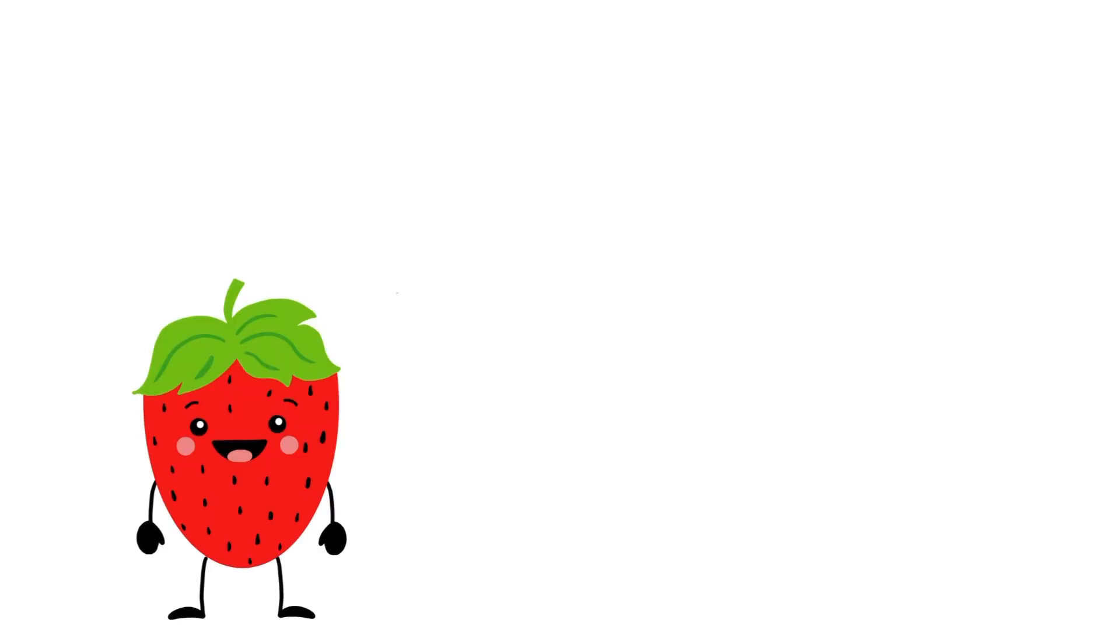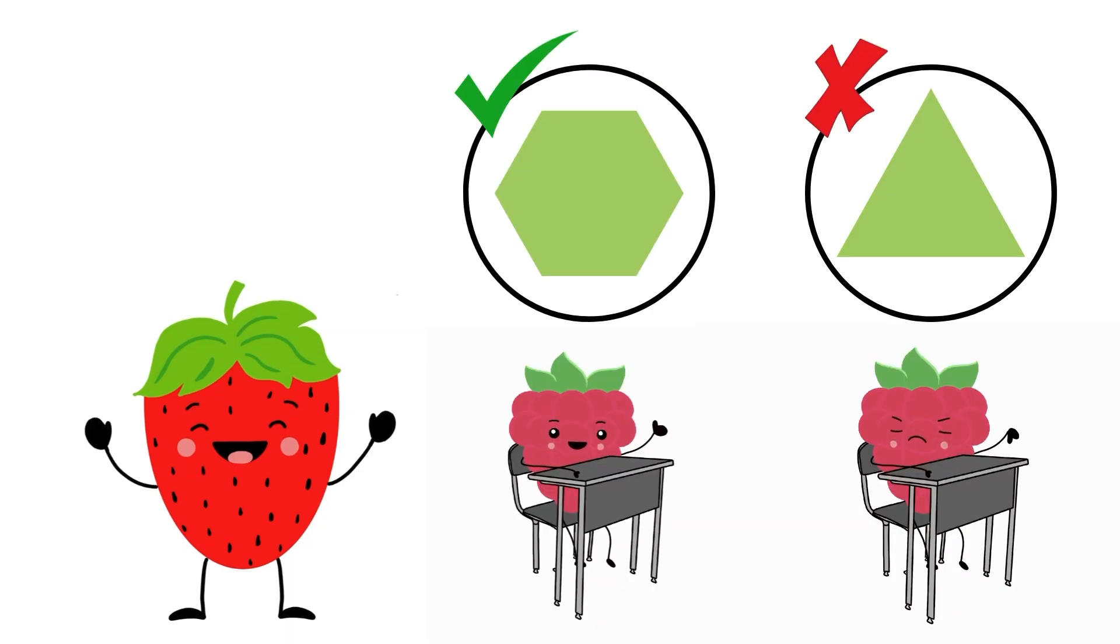Now that you know what a hexagon is, let's practice looking for a hexagon. I'm going to show you some objects and if the object is a hexagon give me a big thumbs up and shake your head yes. But if the object isn't a hexagon and it doesn't have six sides, give me a big thumbs down and shake your head no.